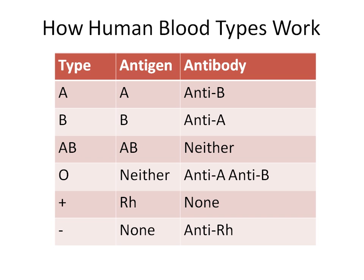Here's how blood typing works. If someone's blood type has an A, that means that on the surface of their cell membranes you would find antigen A. If you're blood type A, you have antigen A. If you're blood type B, you have antigen B on your cells.